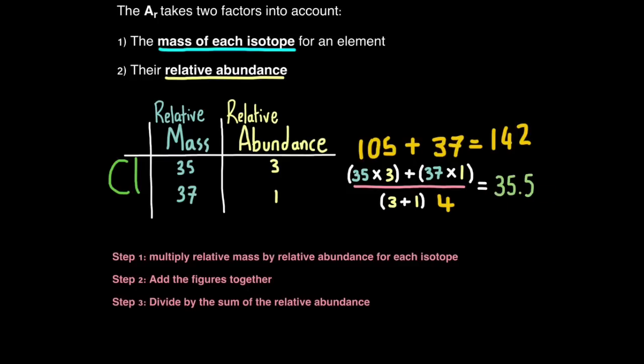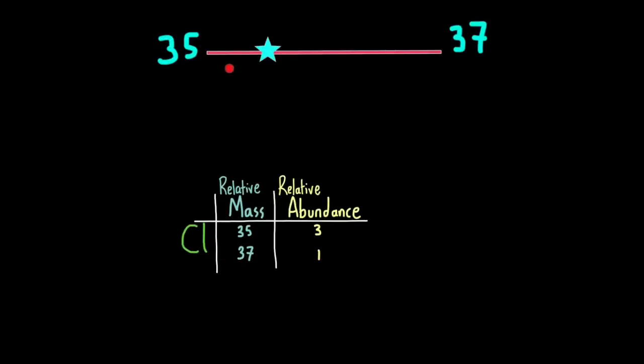And that is why chlorine has a relative atomic mass of 35.5. So if we go back to our sliding scale example, you expect the value between 35 and 37 to be in the middle. So it should be 36. But when you take into account the abundance, you see there's more 35 than 37. So that skews this average towards 35. And that's why the answer is 35.5 and not 36.